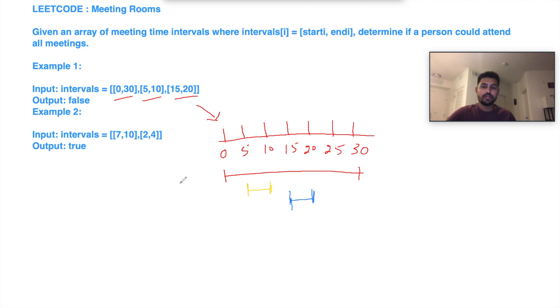And the third meeting starts from 15 and goes to 20. So if you can see, let's say you are an engineer who goes to meeting one. You're starting from zero and you're coming out only after 30 minutes, but the other two meetings have already started which you will not be able to attend. So in this case our return would be false.